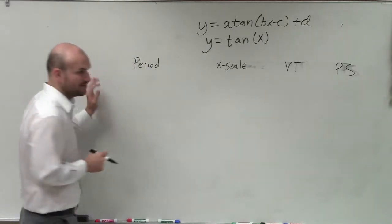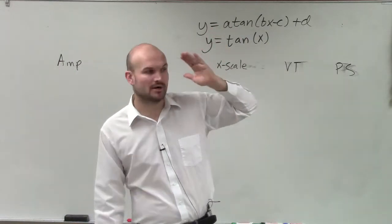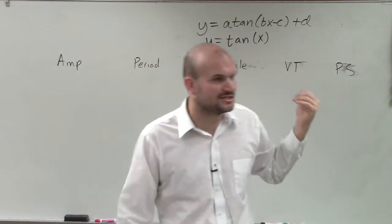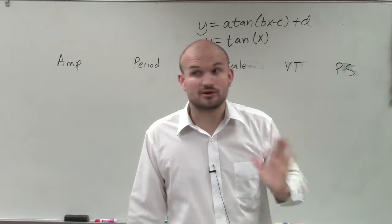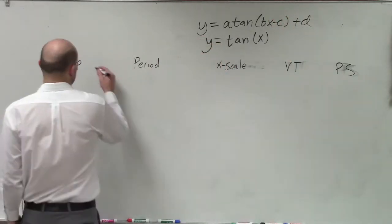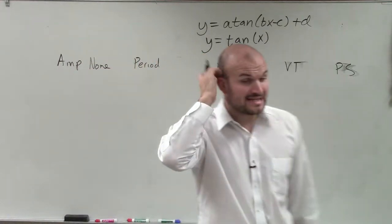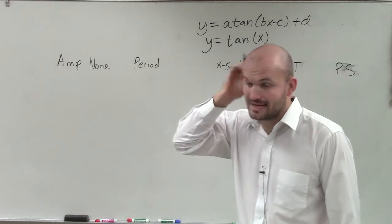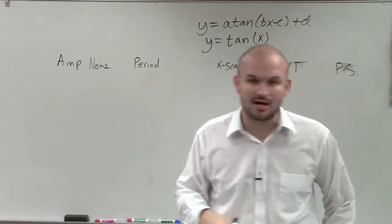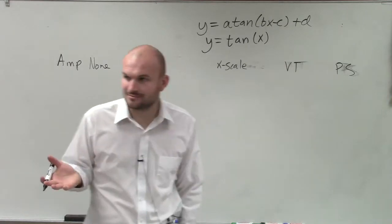Now, the nice thing is the amplitude. Remember that was the half distance between your highest point and your lowest point. But when you guys looked at the graph of tangent, did we have a highest point? No, the graph infinitely approaches that asymptote. So guess what? This should be the easiest point you get on your test. For tangent and cotangent and the reciprocal function, there is no amplitude.